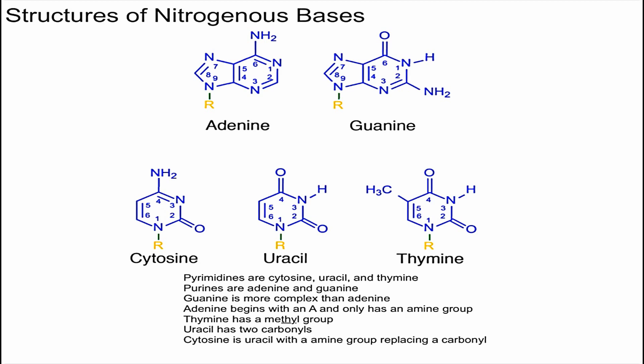How do we tell the difference between adenine and guanine? Adenine begins with the letter A and it also has an amine group — and that's the only functional group it has. Guanine, on the other hand, is more complex: it has an amine group as well as a carbonyl. That's how I like to remember the purines.